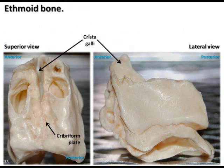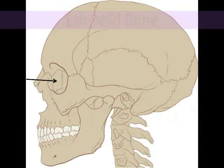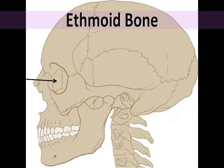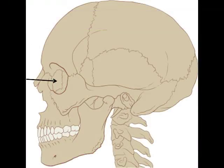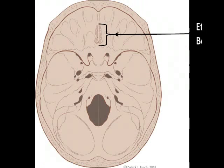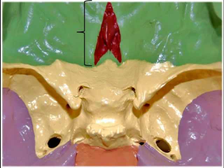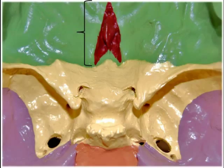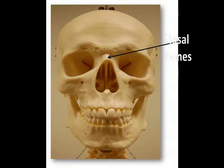The ethmoid bone is a small bone that is located just medial to the orbits in the anterior part of the cranial floor. In relation to the other cranial bones and facial bones, it's located anterior to the sphenoid bone and posterior to the nasal bone.